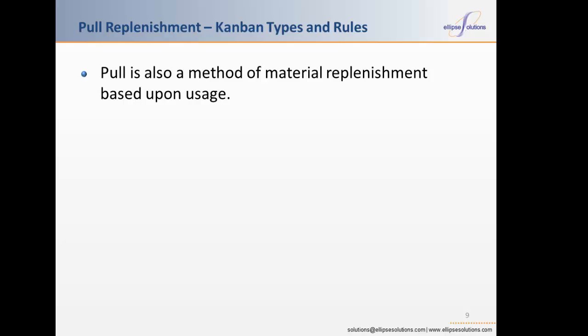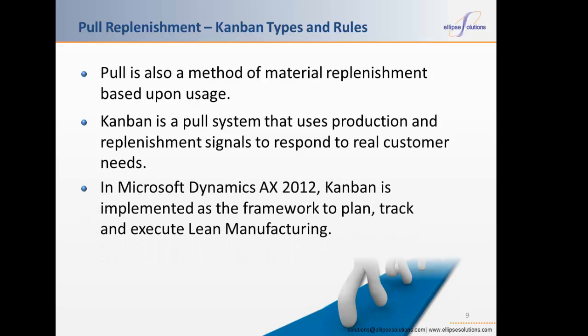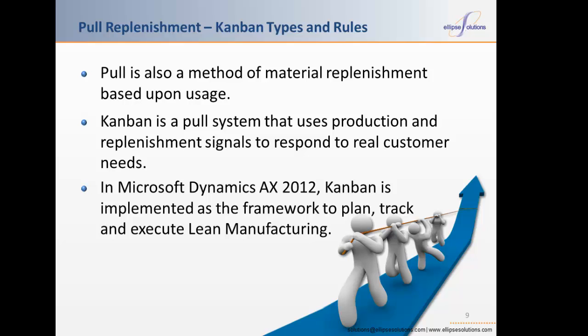Flow manufacturing works with a pull strategy. Pull is a method of material replenishment based upon usage to replace the material consumed. Kanban is a pull system that uses production and replenishment signals to respond to real customer needs and not to forecast or prediction. Kanban in Japanese, loosely translated, is card or signal. In AX 2012, Kanban is implemented as the framework to plan, track, and execute lean manufacturing. Kanban signals are for the most part transferred electronically — this practice is known as electronic Kanban. An electronic Kanban improves upon the traditional approach by also being able to respond immediately to specific demand events.